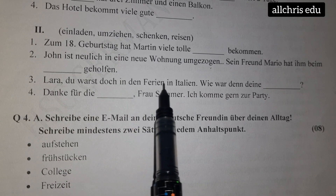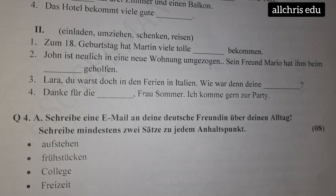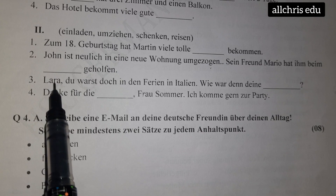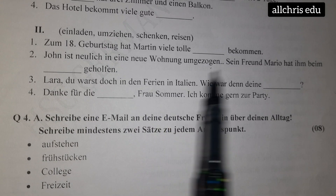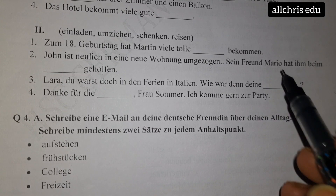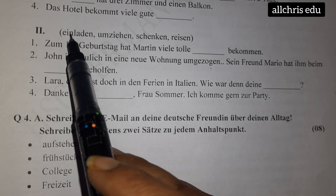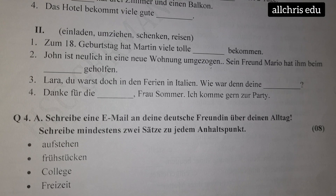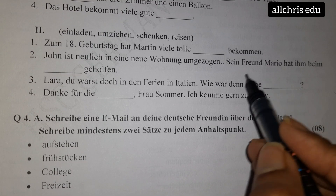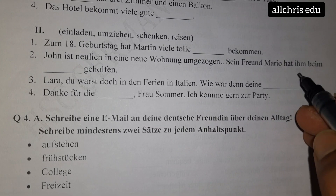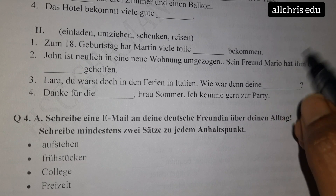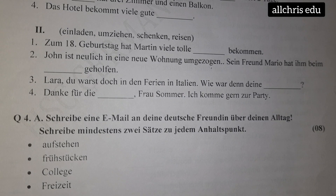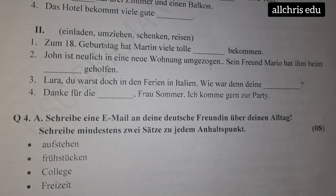Next: 'Lara, du warst doch in den Ferien in Italien. Wie war deine …?' We are talking to Lara — you were on vacation in Italy. How was it? How was what? How was the vacation — not invitation, not relocation, not gifts. Of course 'Reise' — 'Reise' is a tour or journey. So how was the journey? The word 'deine' tells us it is in the singular form with female gender. Spelling: R-E-I-S-E — R should be capital. 'Wie war deine Reise?'